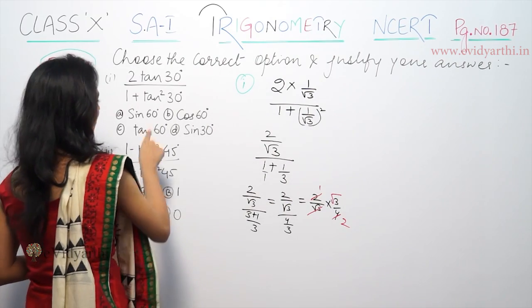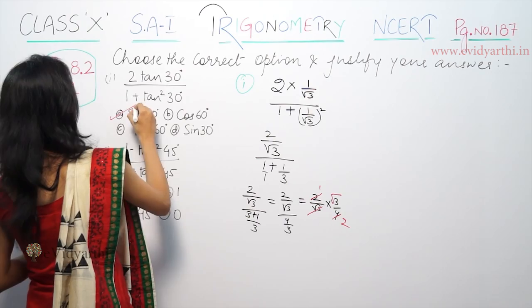This simplifies to root 3 by 2, which equals sin 60. So the correct option is sin 60.